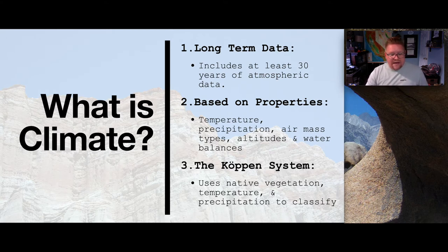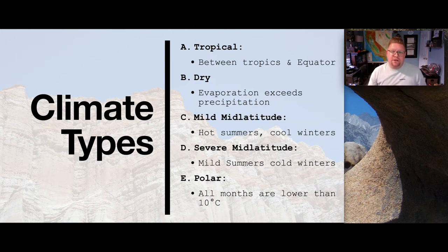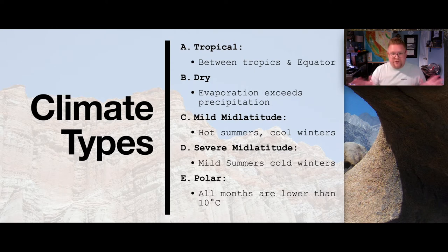Now that we've covered what climate is, let's look at climate types. We're going to utilize the Köppen Climate Classification, which uses a series of letters to represent the average climate. The first letter is the general climate — is it tropical, dry, mid-latitude mild, severe mid-latitude, polar, or even a highland? The first letter distinguishes the region and the overall climate.